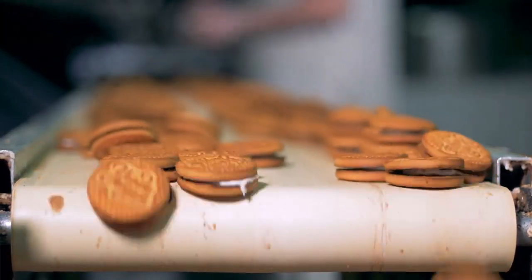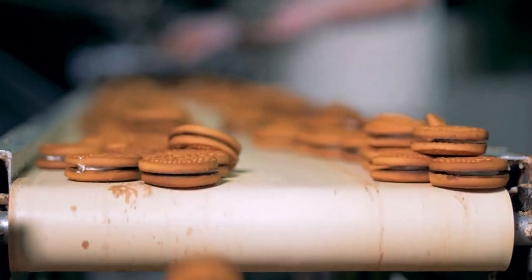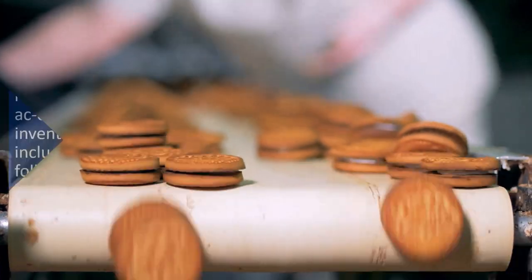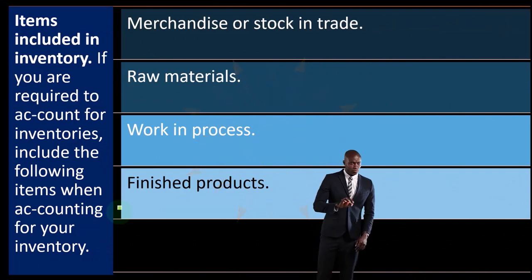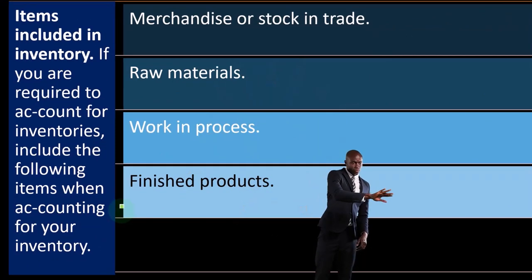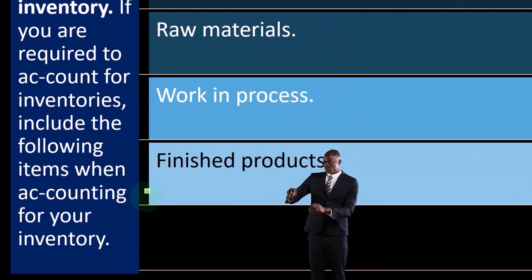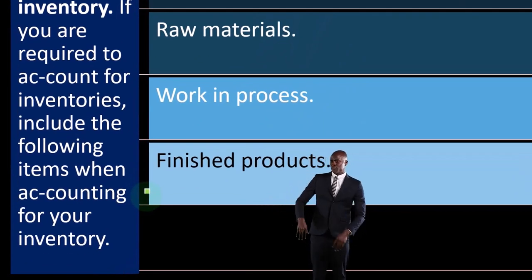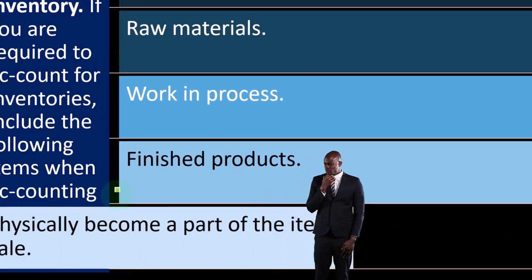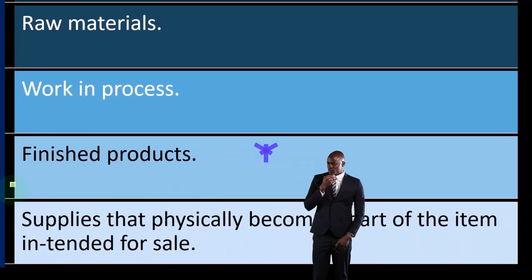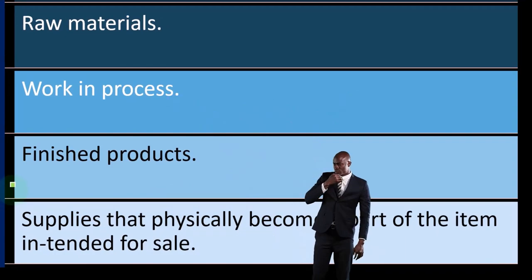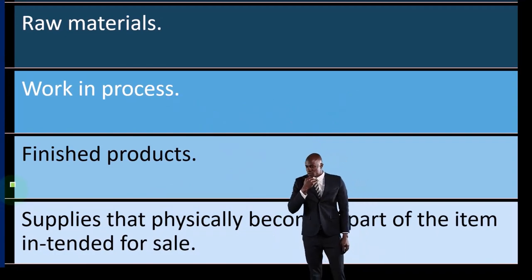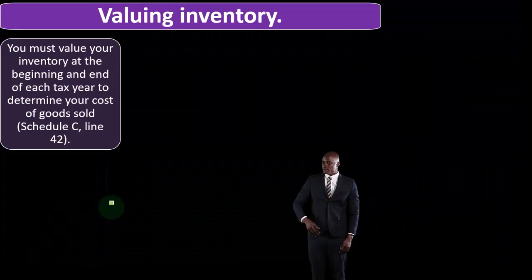Work in process is the middle step of the manufacturing process — when the finished goods aren't done yet; they're no longer raw, but not finished either. Then you have finished products, when you've converted the raw materials into finished goods ready to sell. Also included are supplies that physically become a part of the item intended for sale.